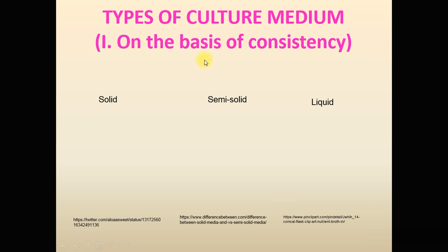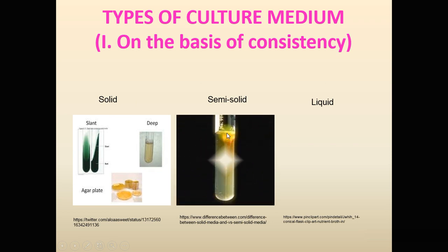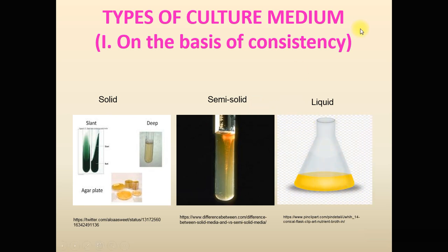On the basis of consistency, culture media can be solid, semi-solid, or liquid. Solid media contain a solidifying agent and are prepared as slants, deep tubes, or plates, and have a firm consistency. Semi-solid media have a jelly-like consistency and contain the solidifying agent at a lower concentration; they are used to study the motility of bacteria. Liquid media do not contain any solidifying agent and are called broth.